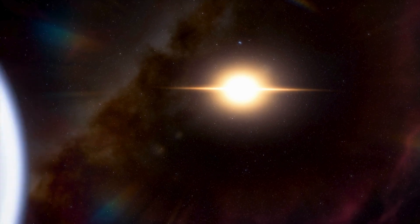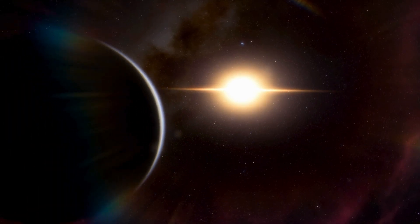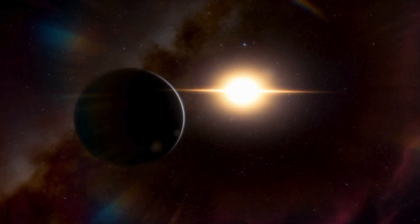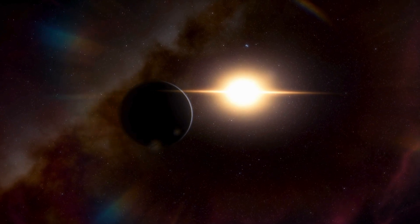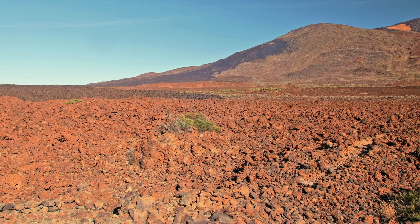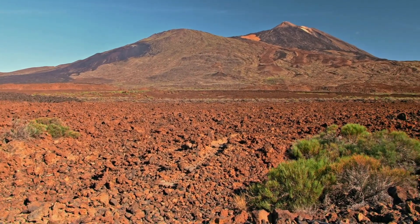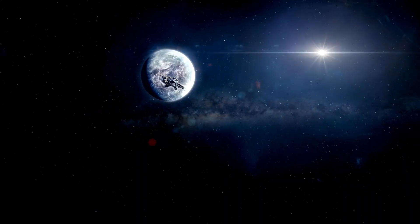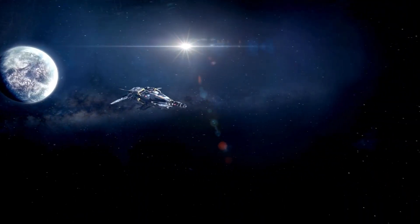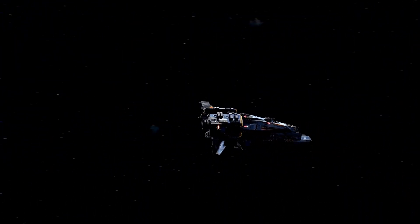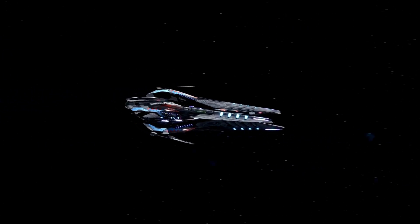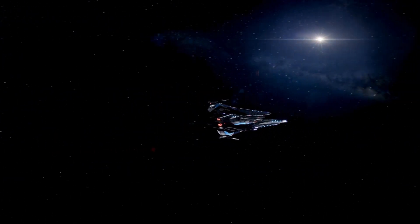But wait, there's more. Proxima Centauri b is not alone in its journey around the red dwarf star. It has a fellow traveler, the super-Earth Proxima Centauri c, and who knows what other secrets this star system holds. And the mysteries don't stop there. Proxima Centauri b receives just about the same amount of energy from its star as Earth does from the Sun. Could this mean there's water on its surface, perhaps even life?